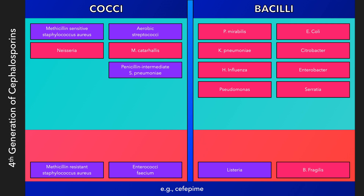Fourth generation cephalosporins have a similar spectrum of activity as third generation cephalosporins, but with greater activity against beta-lactamase-producing gram-negative bacteria. Cefepime gains activity against Pseudomonas, but has diminished activity against staphylococcal species.